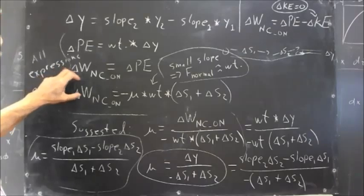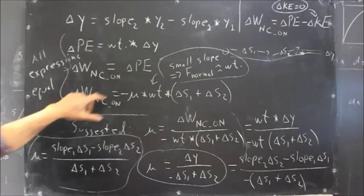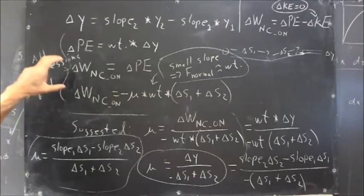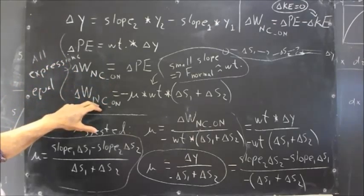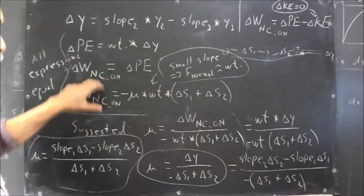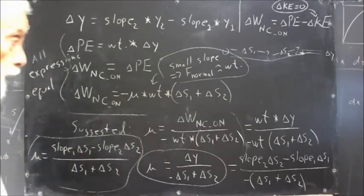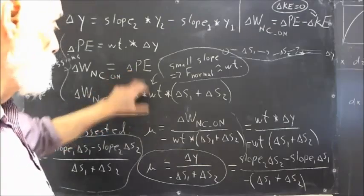We have three equations here, and every quantity in every equation is equal to every other quantity in every one of these equations. Why is that? Well, this equation is an equality between delta WNC_on. These two equations are both equalities.